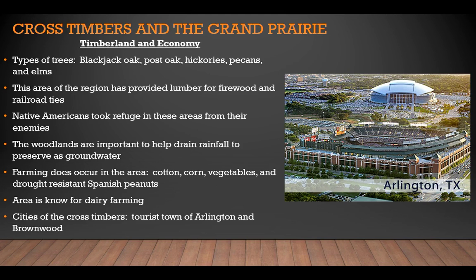In the Cross Timbers, types of trees you will find include black oak, post oak, hickories, pecans, and elms. This area has provided lumber for firewood and railroad ties, making it important to the railroad industry. During the time of the Native Americans, tribes took refuge in these areas because the tall trees allowed them to hide from their enemies. The woodlands also help drain rainfall to preserve groundwater. Farming occurs here as well, mainly cotton, corn, vegetables, and drought-resistant crops such as Spanish peanuts. The area is known for dairy farming and includes cities such as the tourist town of Arlington and Brownwood.